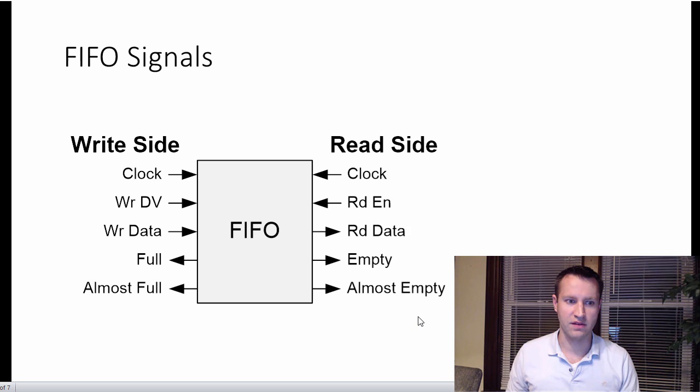So almost full and almost empty. Those are usually full and empty are pretty self-explanatory. Almost full and almost empty are usually settable depending on the FPGA architecture. So you can set them to be, sometimes they're dynamically settable too. So you can change them on the fly. But usually it's like, if there's 20 words in the FIFO, it's almost empty. Or if it's 1024 deep and you've written 1000, it might be almost full. And that can be used to your advantage. I'll get into a little bit more exactly how that works.